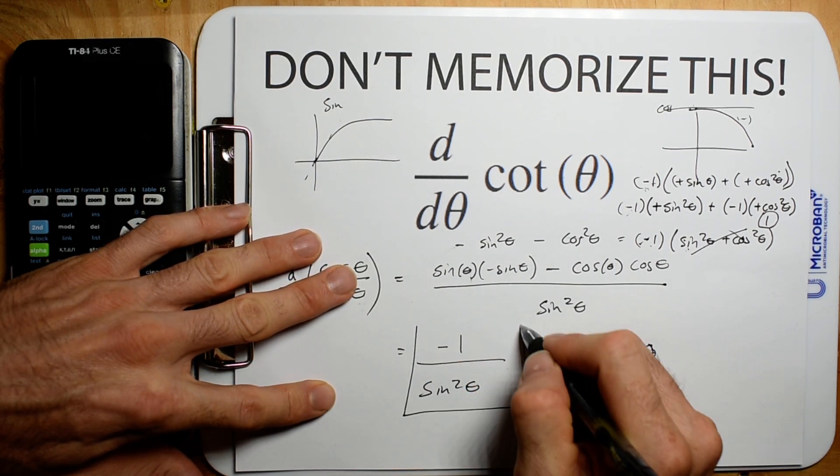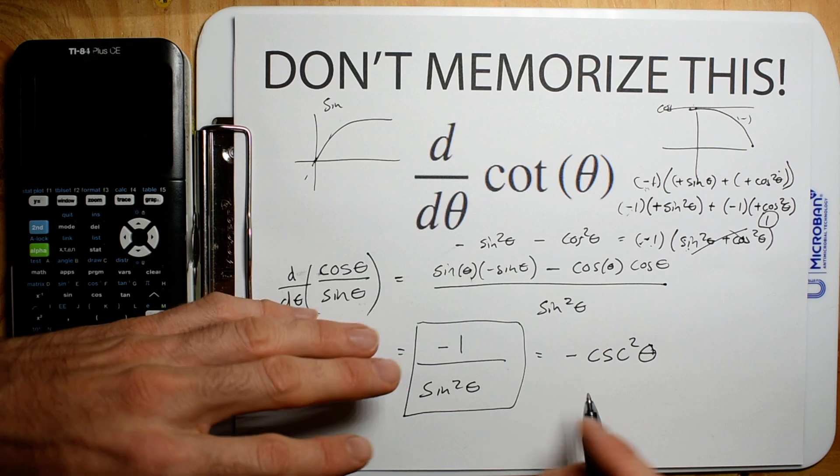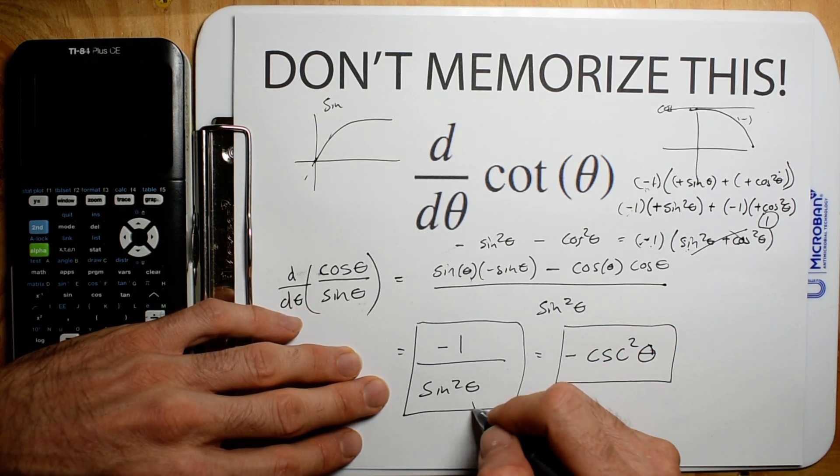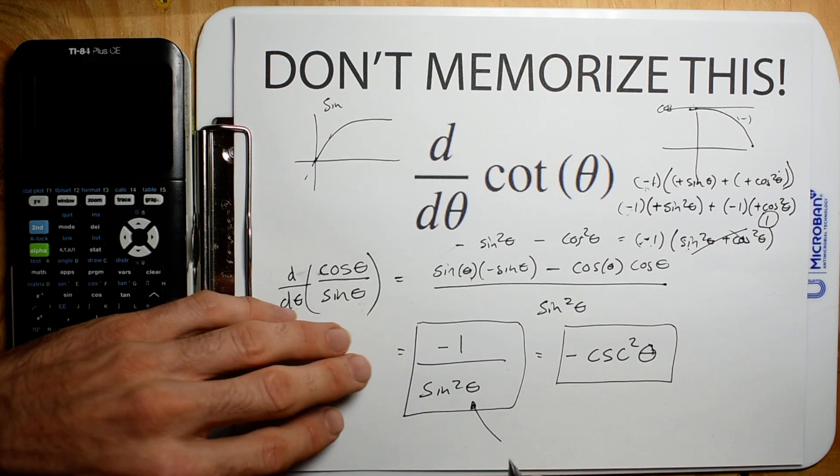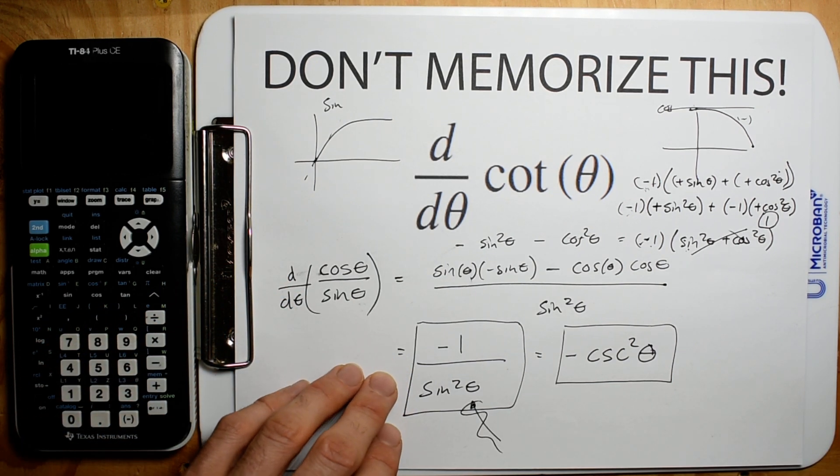But I would just rather use this in my calculations than this for whatever reason. Maybe I can use another identity and cancel some more stuff out. Anyway, so that's that in a nutshell.